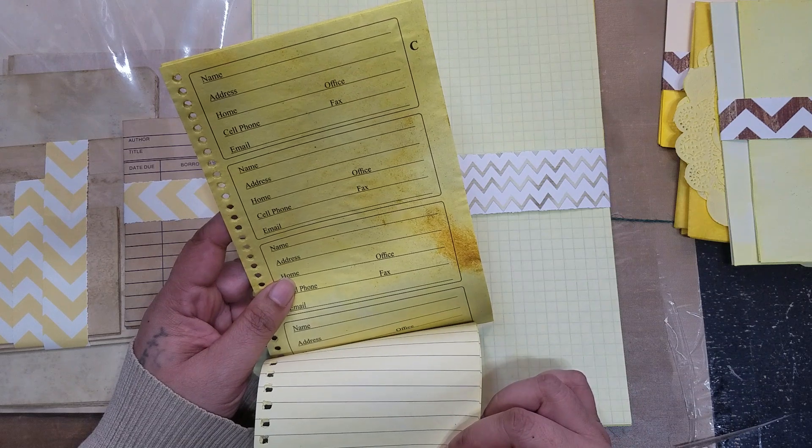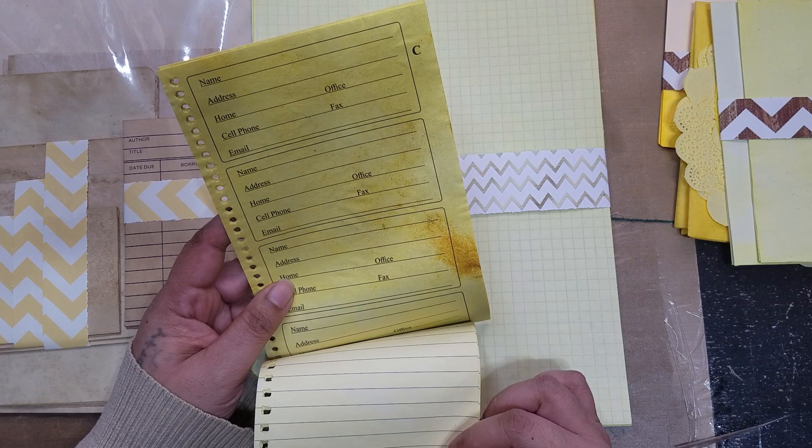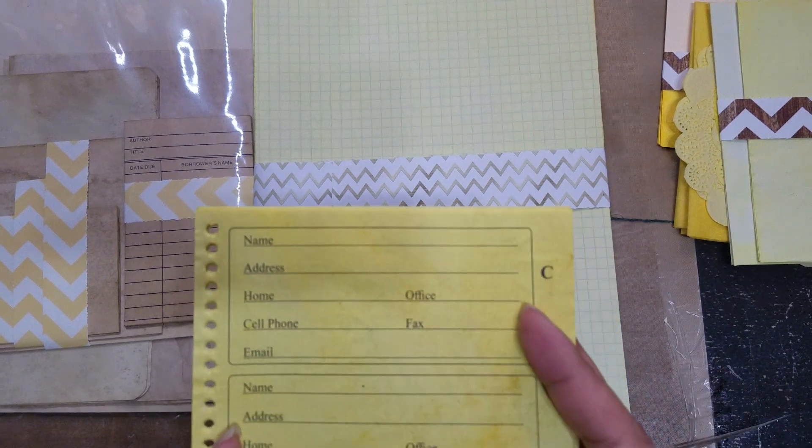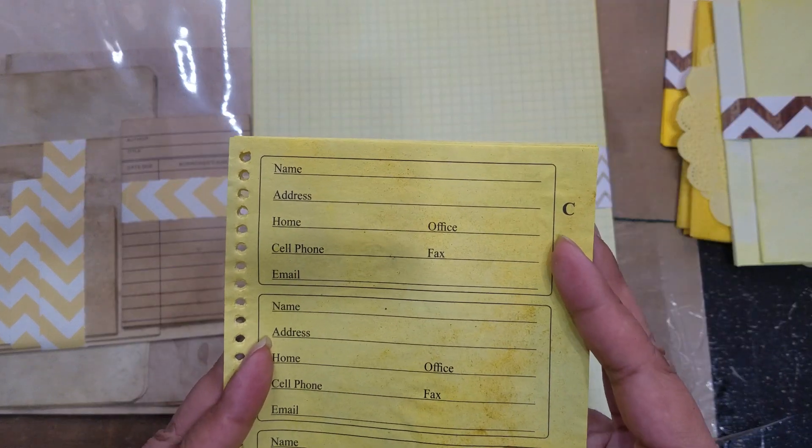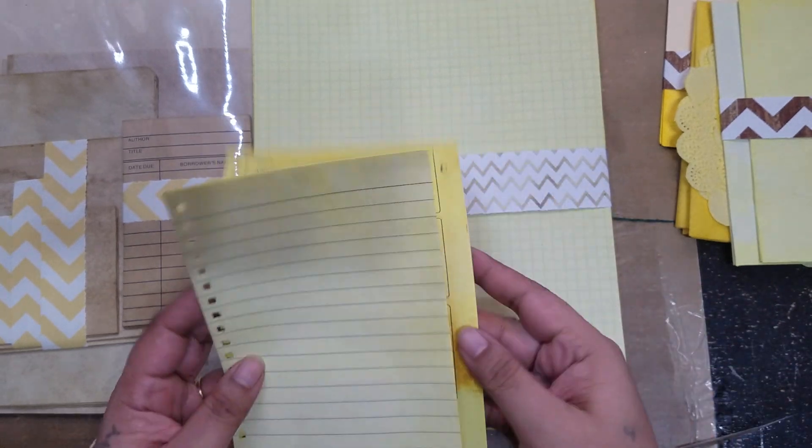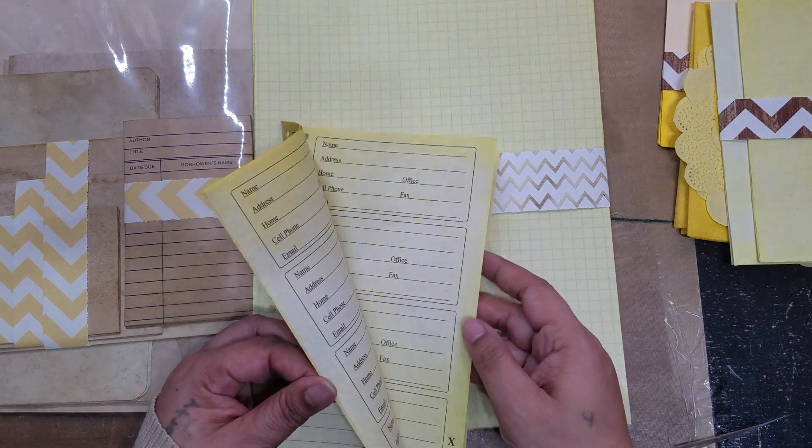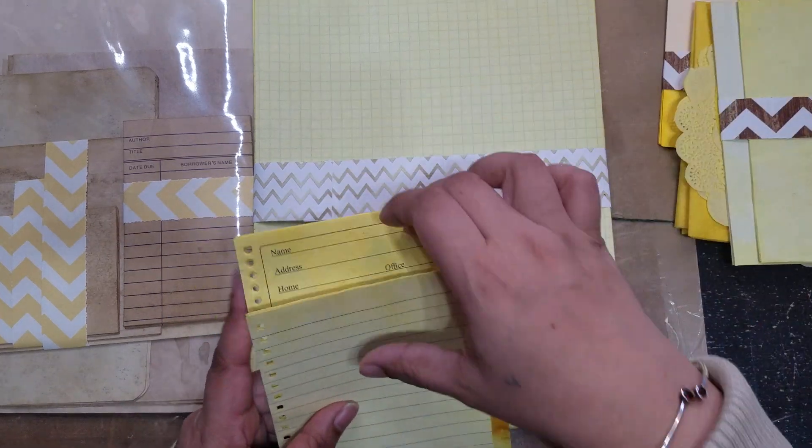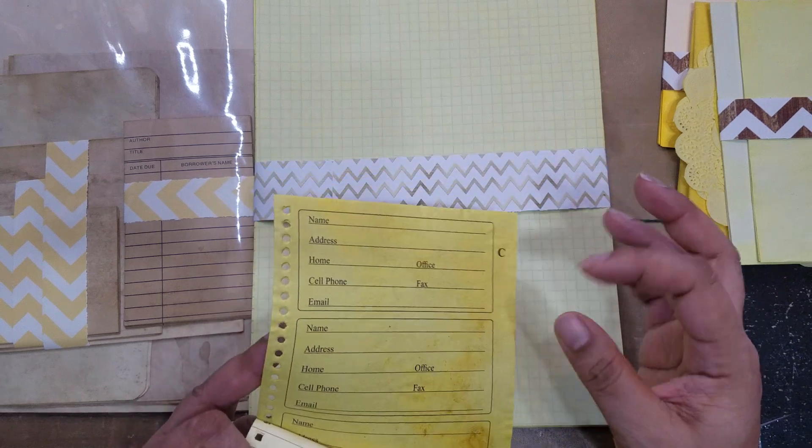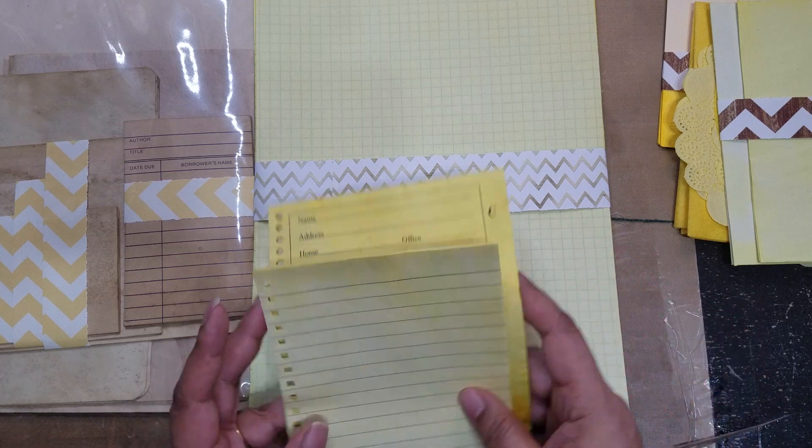And then here are the, I thought these were like message pads, but it's not. It's like from an address book. Oh, can you see that? I don't even know. So it has the name, address, home number, office number, cell phone, fax, email. Oh, so front and back is actually the same. So that is that. Actually, it would be kind of neat. Cut it apart, cut each section apart, and then kind of back it onto maybe a harder card stock and use it as like a tag. That'd be an idea.